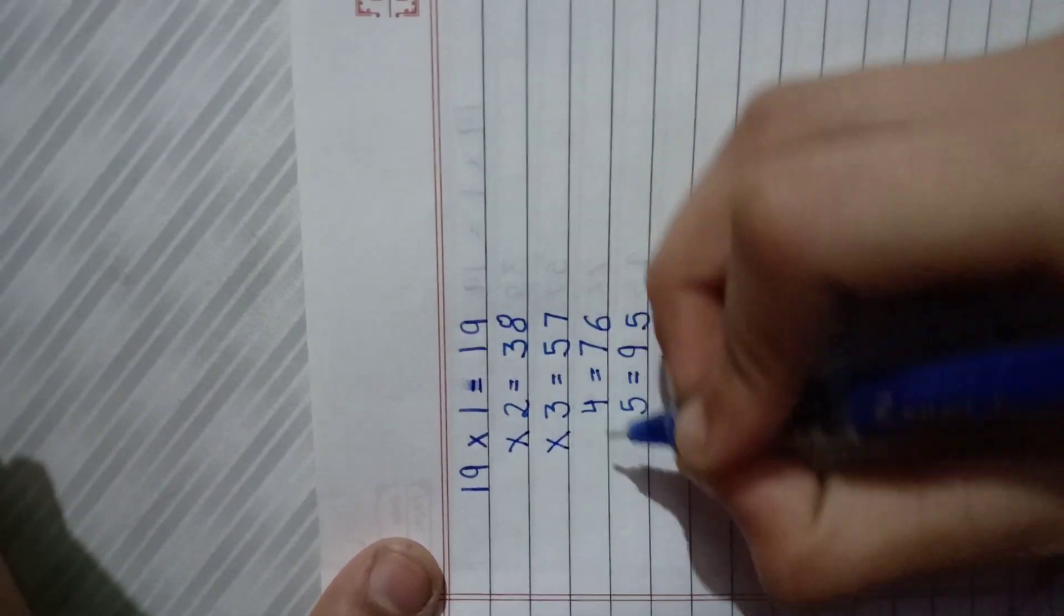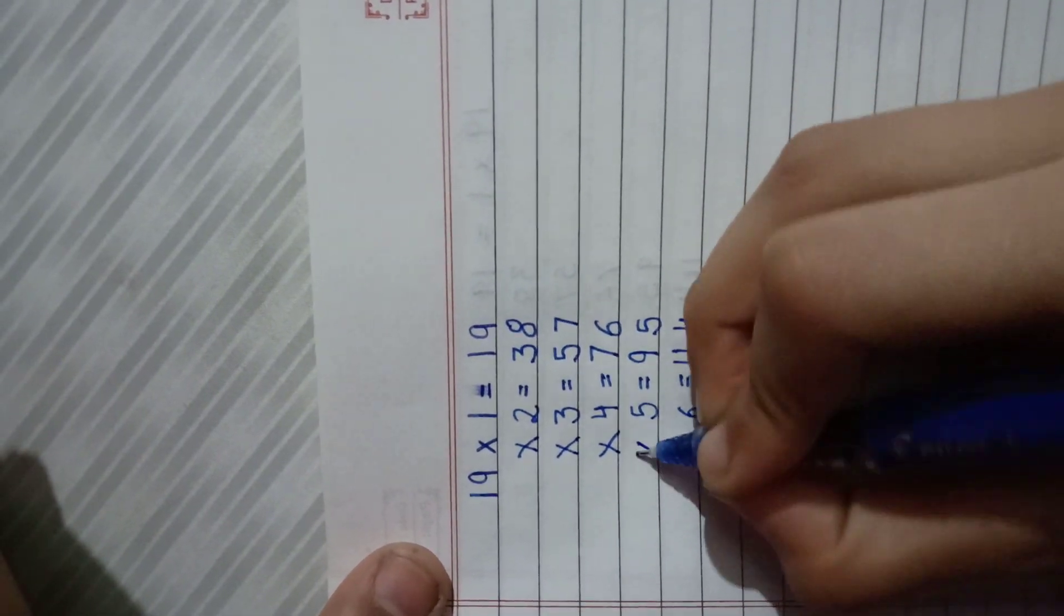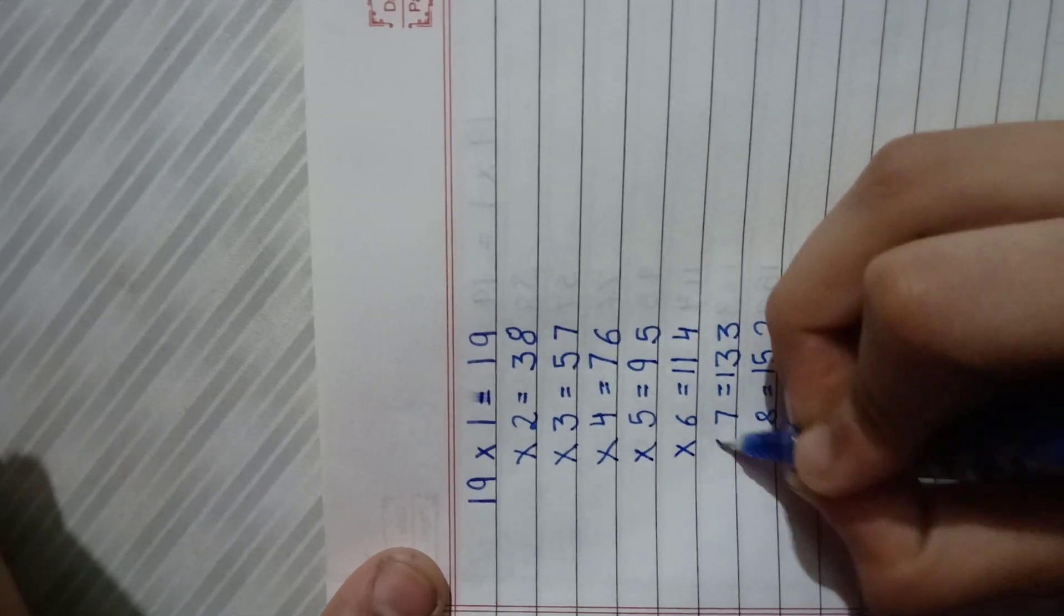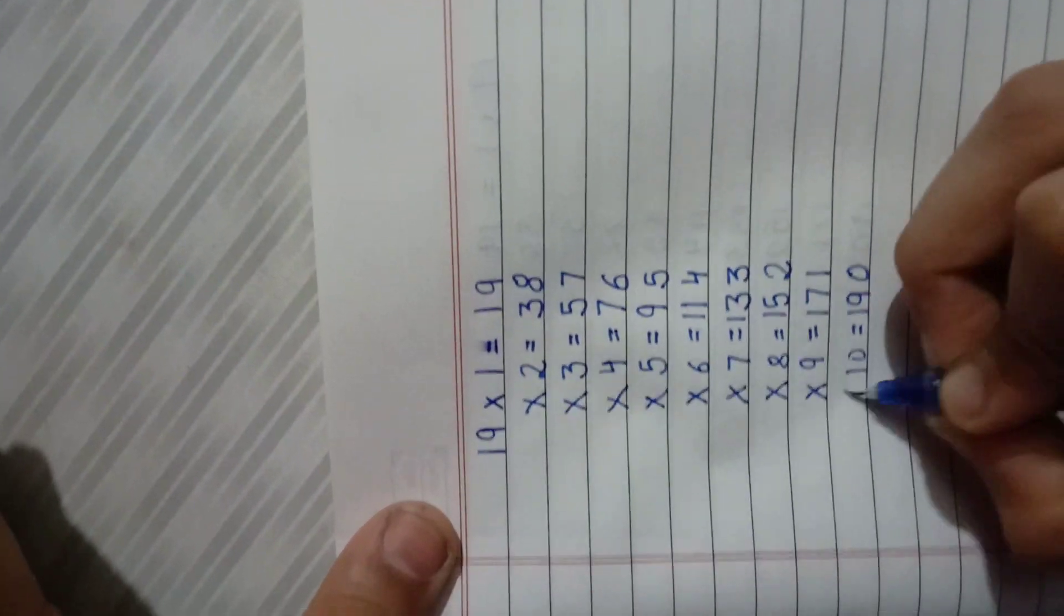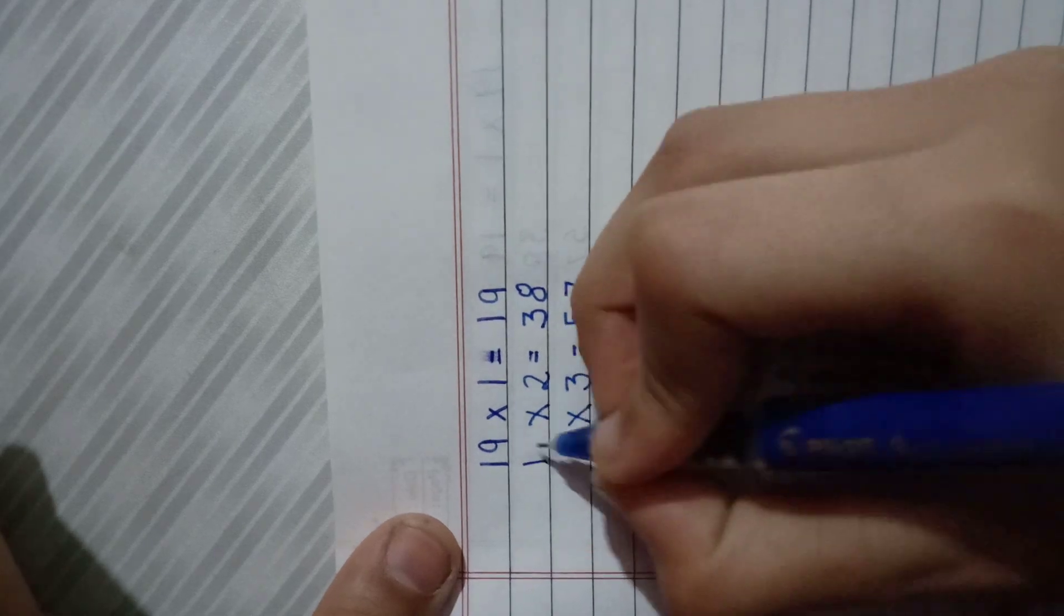And here we have to put the multiply sign, and here we have to write 19.